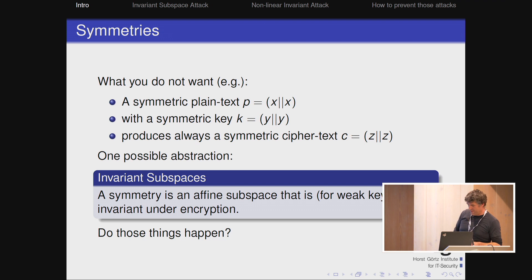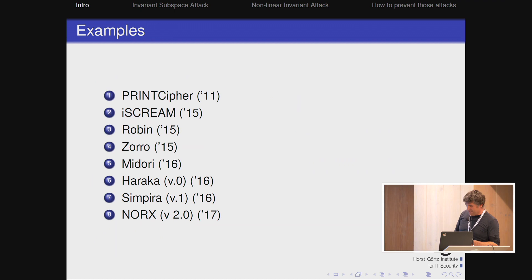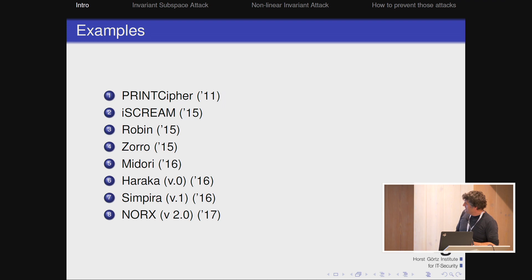I think the right abstraction from this concrete setting is to talk about invariant subspaces. Why is it a subspace? Because you can write down linear equations. Being symmetric is something you can characterize by linear equations. Generalizing this, you end up with affine linear subspaces. You don't want a subspace of plaintexts encrypted under some weak keys to end up in the same subspace for the ciphertext — that would not happen for a random permutation. And here's a list of ciphers that get broken with invariant subspace attacks — it happens.